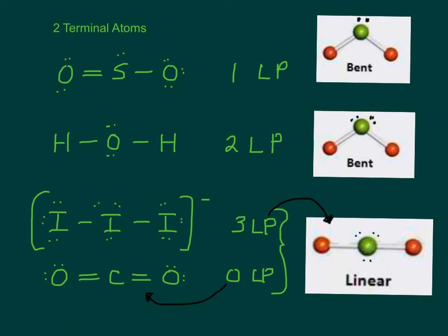So I'm going to start with what happens when I have molecules with two terminal atoms. What does that mean? That means the number of atoms attached to the central atom. So for SO2, there's two O's attached to the S. For water, there's two H's attached to the O. For I3 minus, there's two I's attached to the central I. For CO2, there's two O's attached to the C. So the rule is when you have two terminal atoms and one lone pair, here's your lone pair, it's going to form bent.